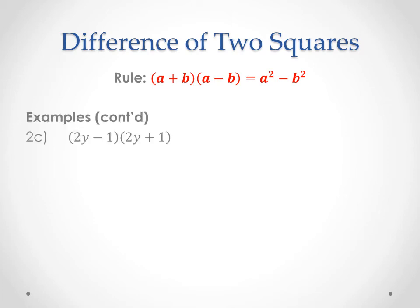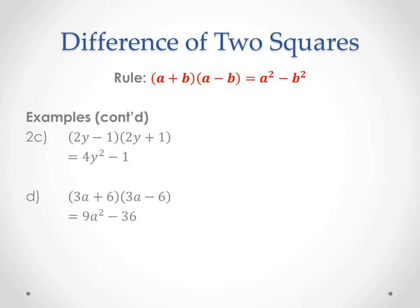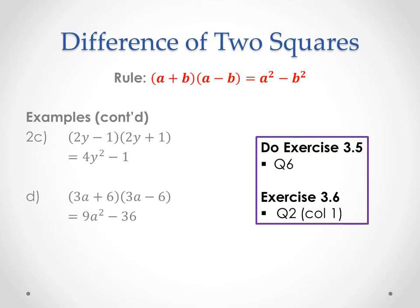So let's look at a couple more examples using the shortcut. Expand and simplify: we recognise these two as the difference of two squares. The answer is the first term squared — 2y all squared is 4y squared — minus the last term squared: 1 squared is 1. So 4y squared minus 1. For 3a plus 6 times 3a minus 6, again two identical brackets except for the sign, so the answer is the first term squared minus the last term squared: 9a squared minus 36.